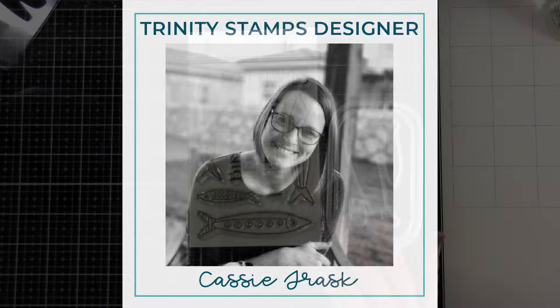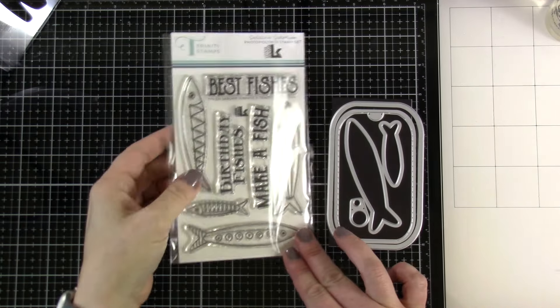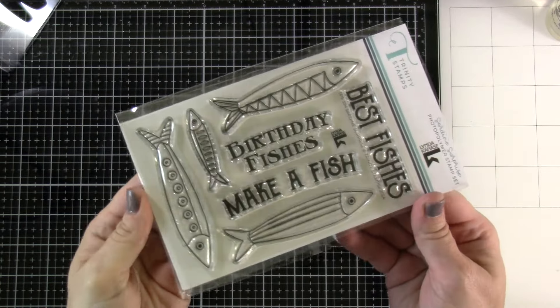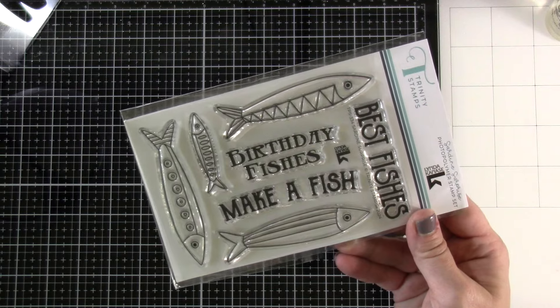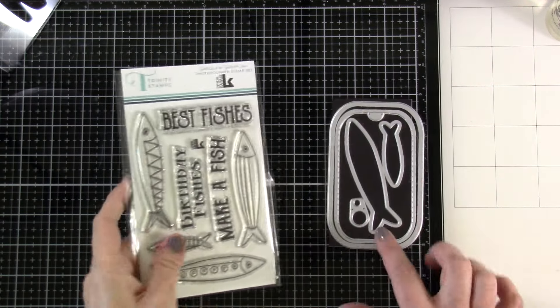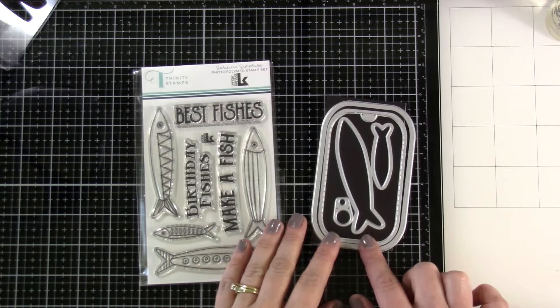Today we're going to be making a shaped card using some new products. This is the adorable sardine surprise stamp set. I just love this little stamp set and there's also a coordinating die that you can get along with it.